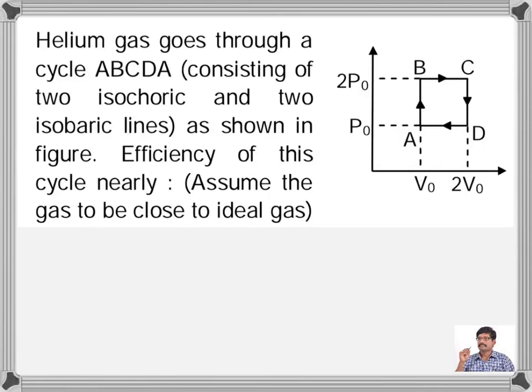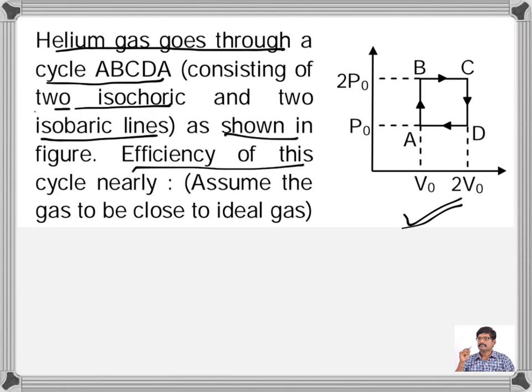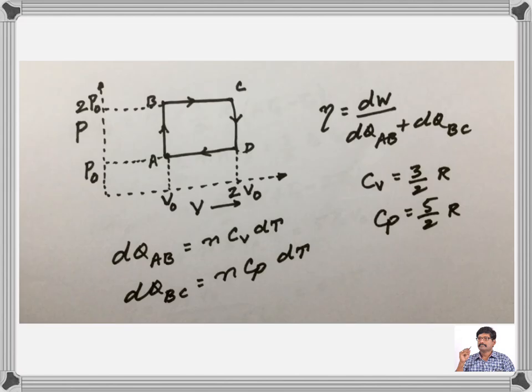Look at this problem where you have to find the efficiency of a cycle, the efficiency of a given cycle. Here, helium goes through a cycle ABCDA consisting of two isochoric and two isobaric lines as shown in figure. You have to find the efficiency of this cycle. Now, look at this diagram.